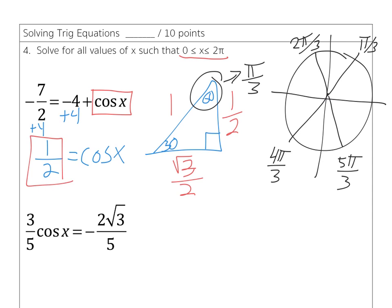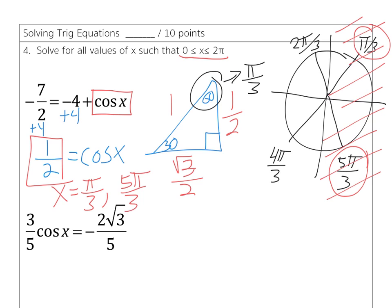For cosine to be positive 1 half, we're looking only at the positive X values. Therefore, I get two answers, pi over 3, and 5 pi over 3.